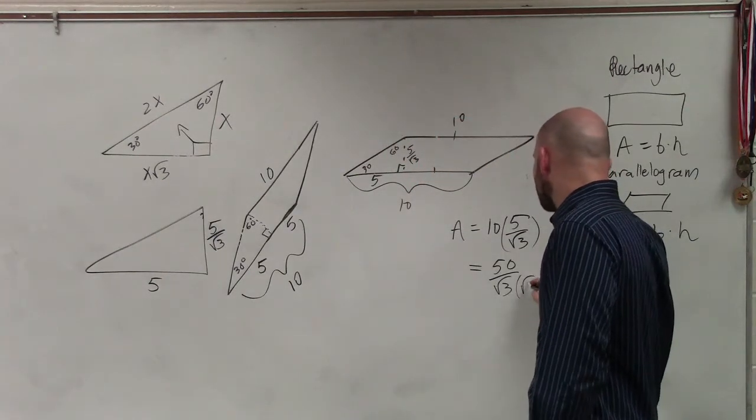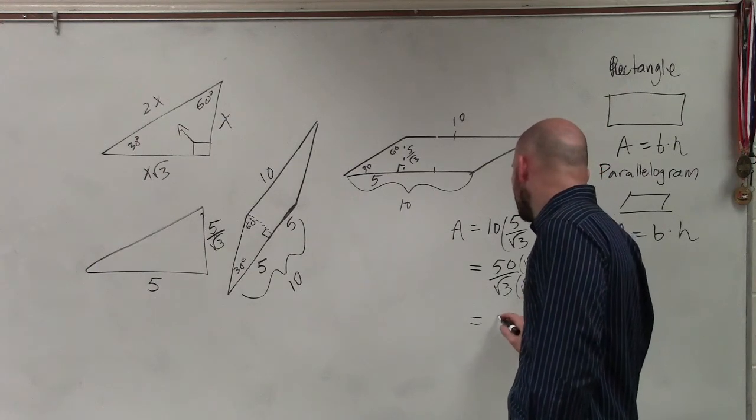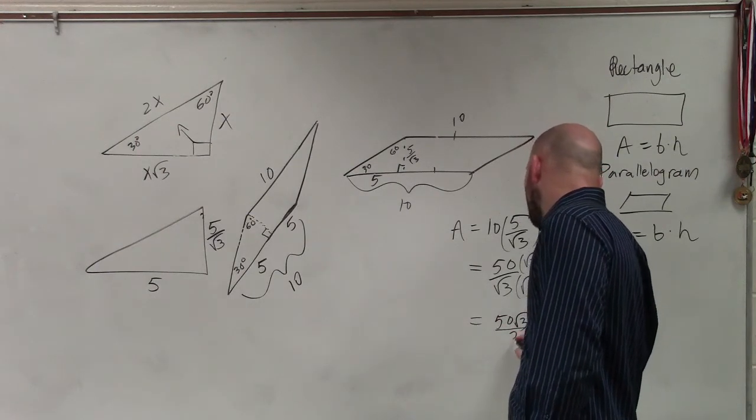I will rationalize that so we don't have a radical on the bottom. And if you wanted the exact answer of the area, it would be 50 times the square root of 3 divided by 3.